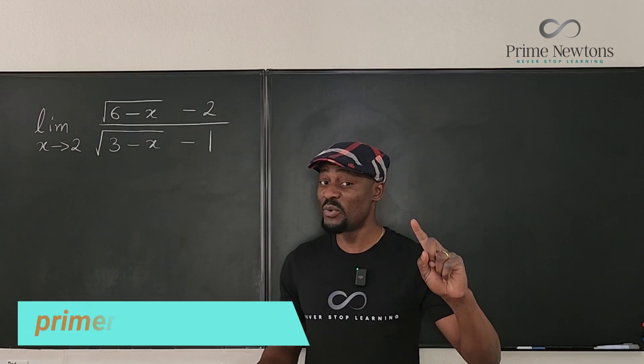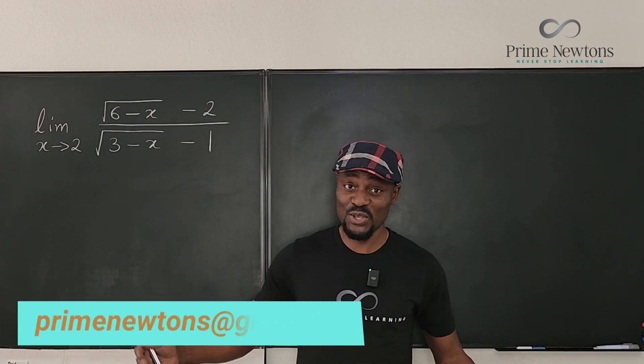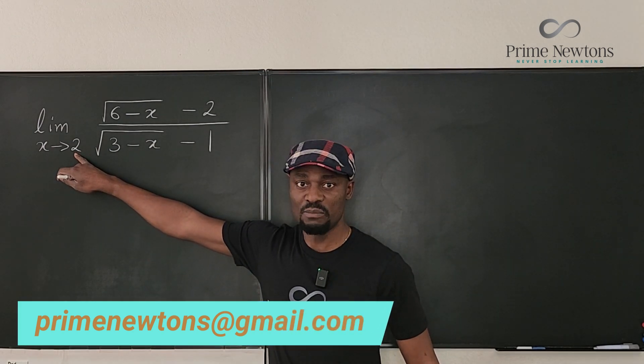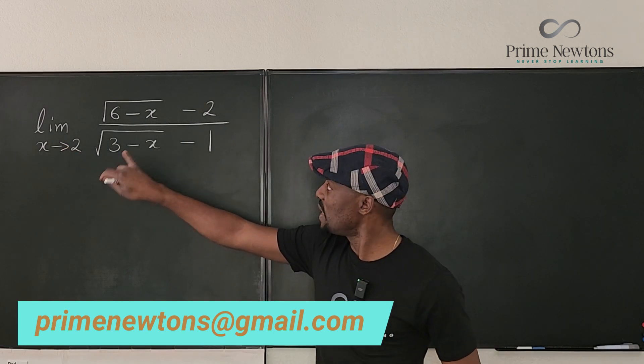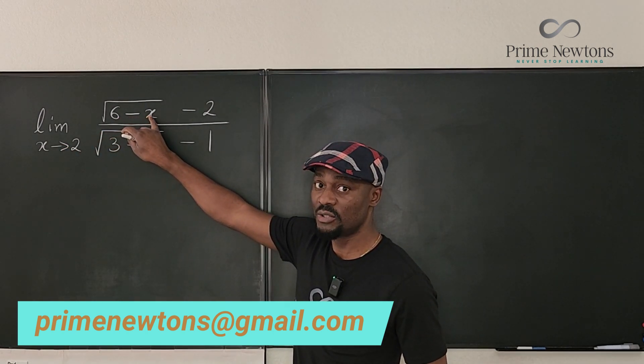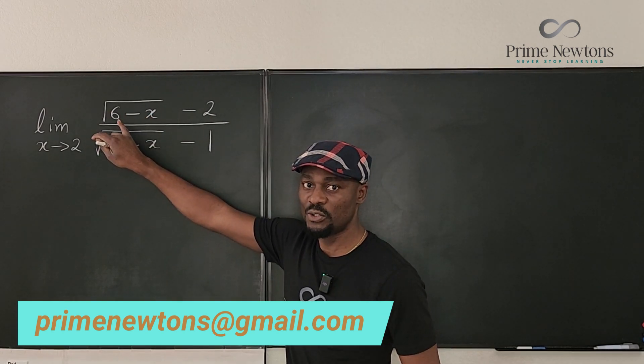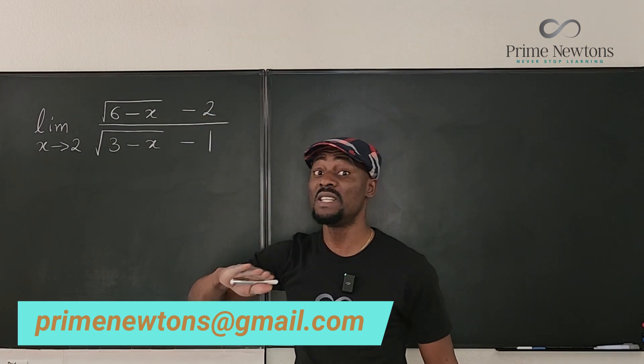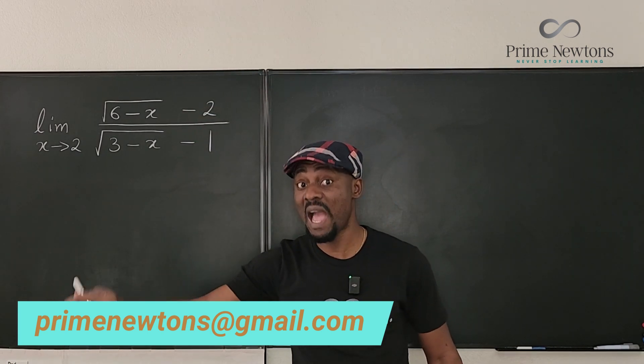Remember, whenever you take a limit, the first thing you want to do is plug in the target point. If we plug in 2 into this, you're going to get 6 minus 2, which is 4. The square root of 4 is 2. 2 minus 2 is 0. So there's a 0 in the numerator, which is never a problem. In fact, you should be happy.